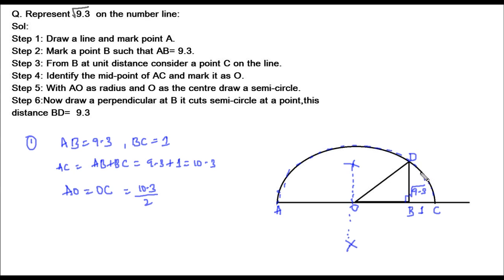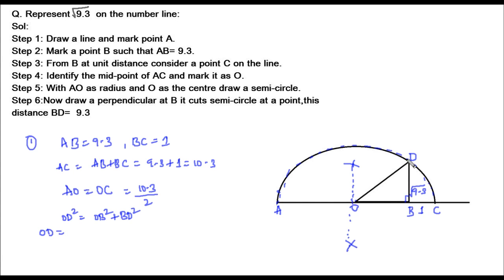To prove this, we join O with D. Triangle OBD is a right-angle triangle with the right angle at B. According to Pythagoras theorem: OD squared equals OB squared plus BD squared. Since D is a point on the semicircle, OD equals the radius, which is 10.3 divided by 2.